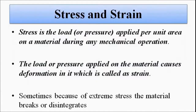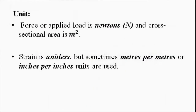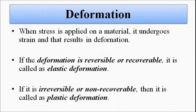We know that when stress or load is applied on a material or a component, it undergoes deformation — that is, change in length and cross-sectional area, which is strain. Stress produces strain. This whole phenomenon of change in the physical dimensions of the material is called deformation. Deformation is of two types: reversible or recoverable, and irreversible or non-recoverable. The reversible one is called elastic deformation and the irreversible one is called plastic deformation.